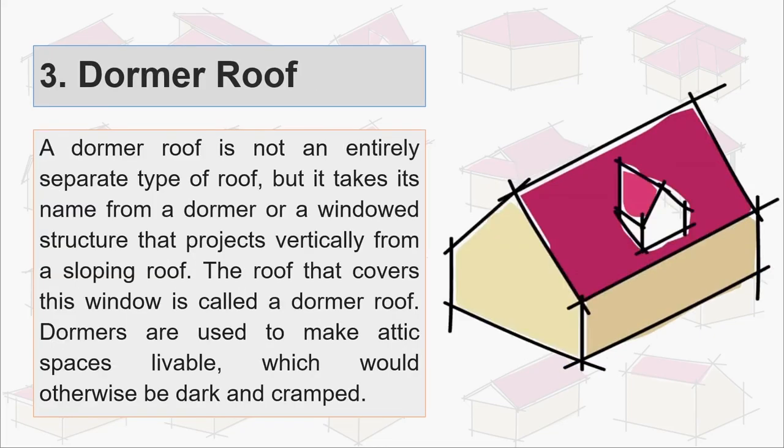Third is dormer roof. A dormer roof is not an entirely separate type of roof, but it takes its name from a dormer or a window structure that projects vertically from a sloping roof. The roof that covers this window is called the dormer roof, and dormers are used to make attic spaces livable which would otherwise be dark and cramped.